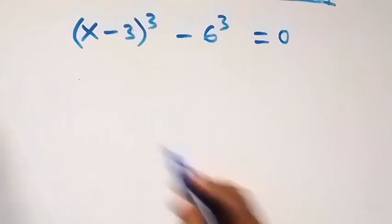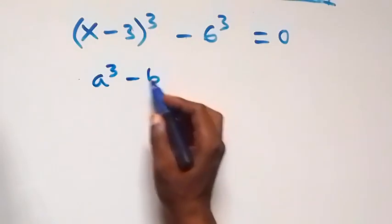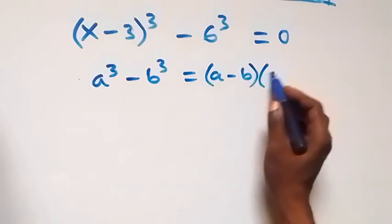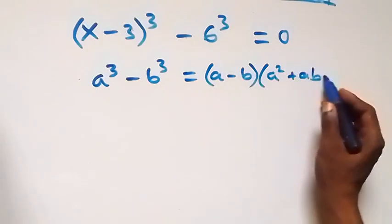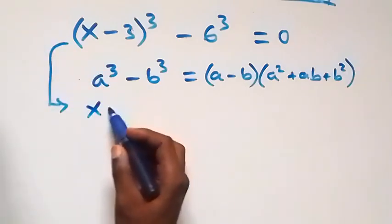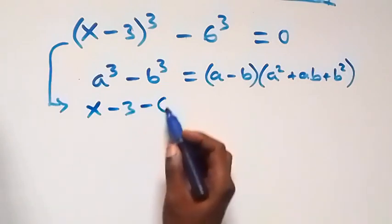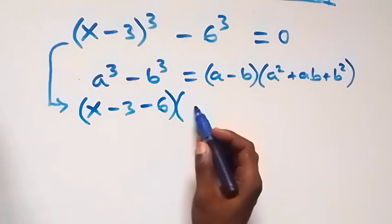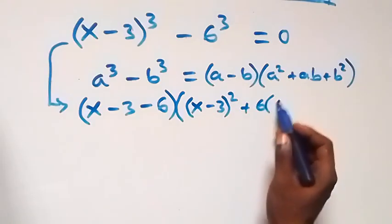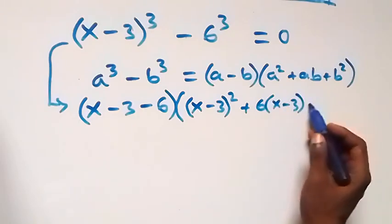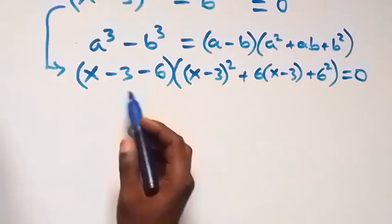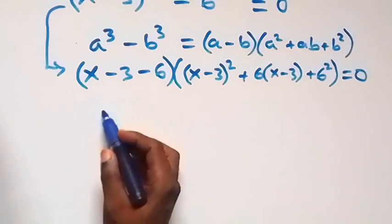For the second case, this follows from a³ − b³ = (a − b)(a² + ab + b²). So this becomes (x − 3 − 6)[(x−3)² + 6(x−3) + 6²] = 0, giving (x − 9)[(x−3)² + 6(x−3) + 36] = 0.